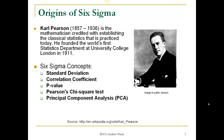Karl Pearson is another mathematician, credited with establishing classical statistics as we know it today. He even founded the world's first statistics department in 1911, and he introduced quite a few statistics used in Six Sigma: the standard deviation, correlation coefficient, the p-value — very, very important — Pearson's chi-square test, and principal component analysis.